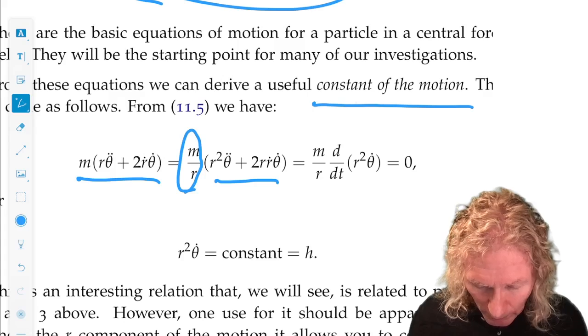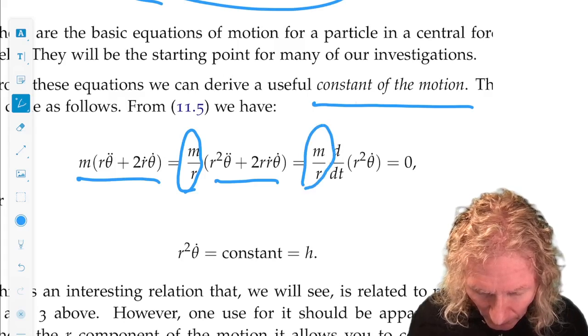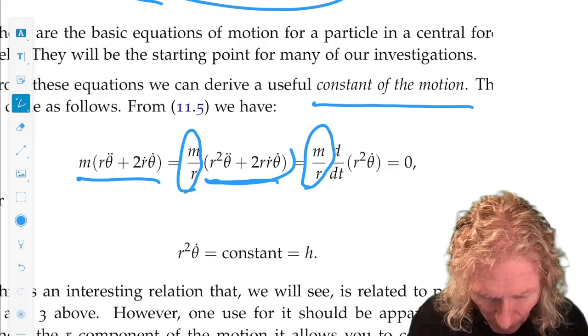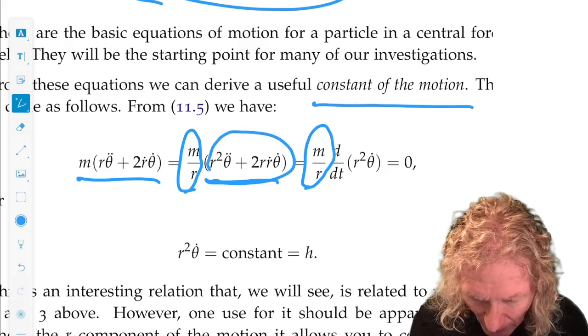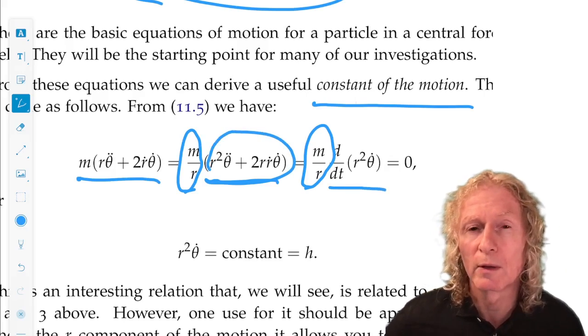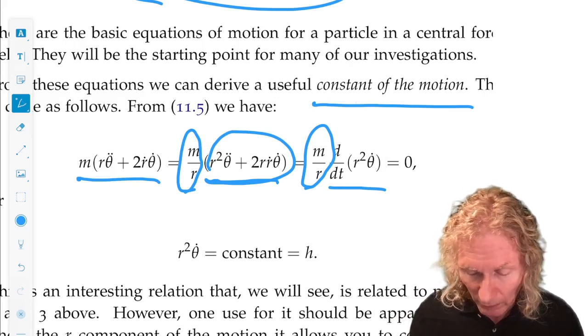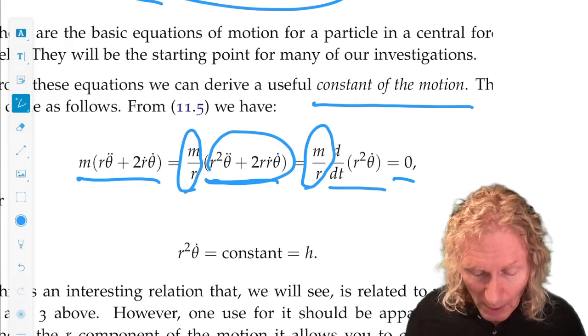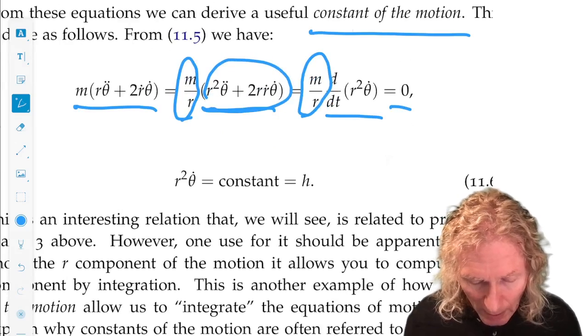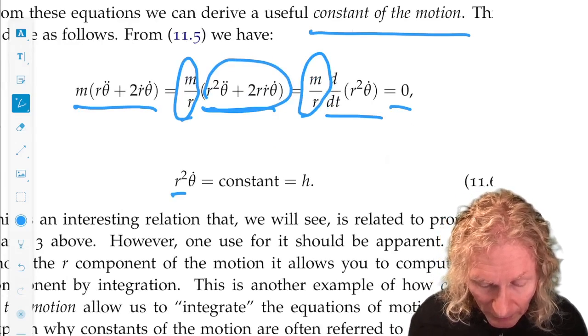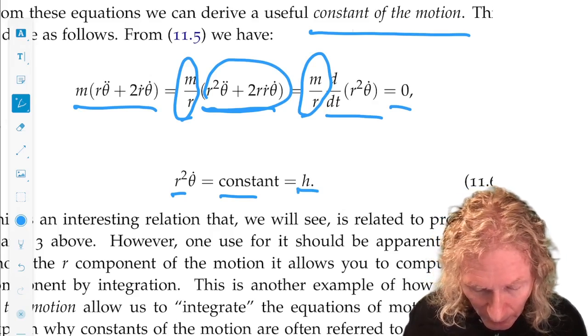And now the m over r, r still stays the same. But this term here happens to be the same as d/dt of r² θ̇. And this is equal to zero from the equations of motion. This means r² θ̇ is constant in time. We'll call that constant lowercase h.